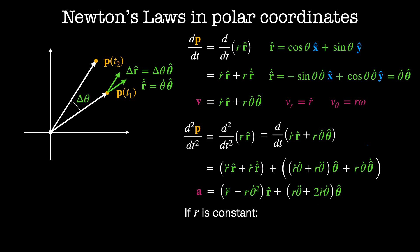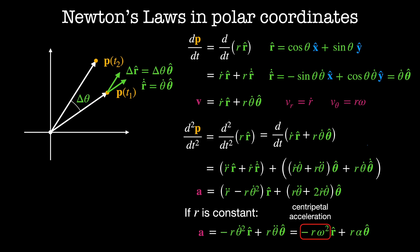In the special case where r is constant, P is traveling in a circle. Then its acceleration is given by minus r·theta-dot² in the r-hat direction plus r times theta-double-dot in the theta-hat direction. We can write this in a slightly more familiar way: minus r times omega-squared is centripetal acceleration, and in the angular direction, r times alpha is the tangential acceleration.